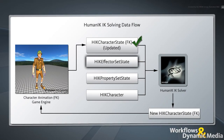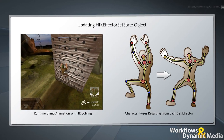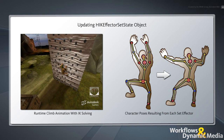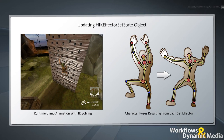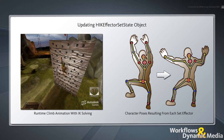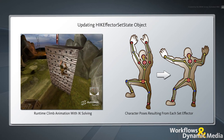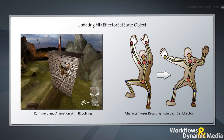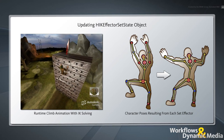Once you have updated the HIKCharacterState object with the current FK pose, you need to update the HIKEffectorSetState object. This sets each effector with the translation and rotation that you want the body part to exhibit in the final pose. For example, if you want to make your character's climbing animation more realistic at runtime by having him reach for the handles along the way, you would need to update the character's hands and feet effectors of the HIKEffectorSetState object based on the location of these target handles.